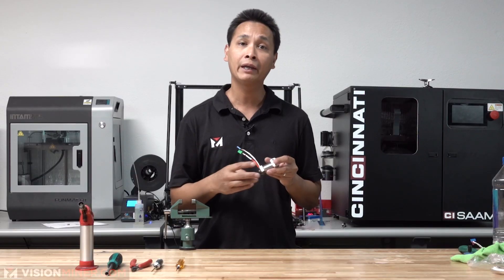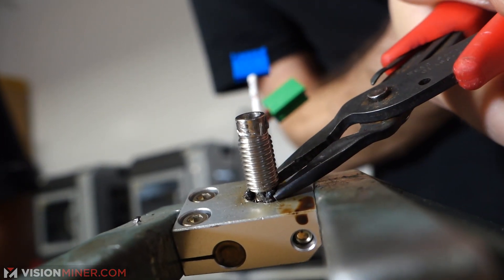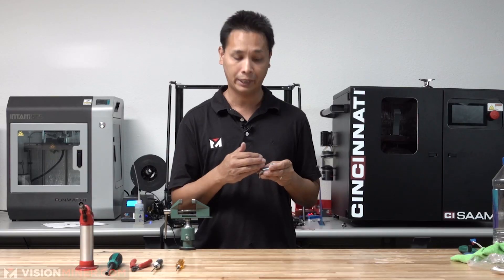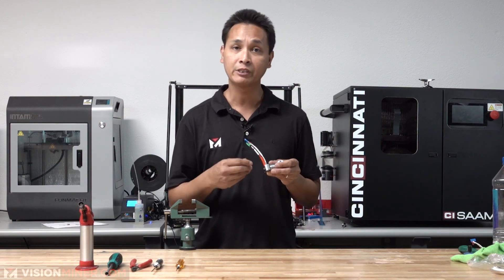Now you may ask why you would need to take your hot end apart. A couple of reasons. Sometimes you do get a clog on your nozzle and your heat break, or you may just have to change out your heating element and your thermostat and your heat block.